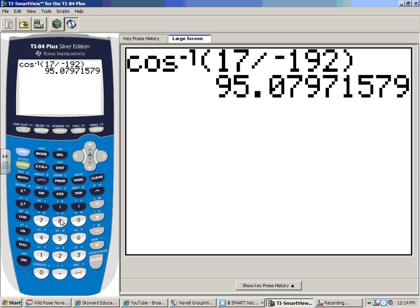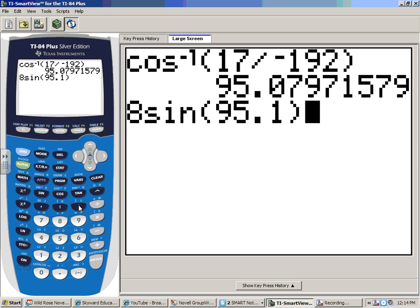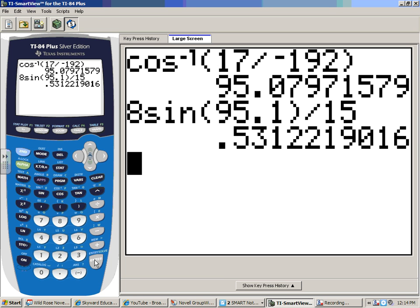So we've got 8 sine of 95.1. Don't forget to close off those parentheses on that one right there. Divided by 15. All right, we're expecting a decimal here. Oh, there you go. That's believable. And that's what sine of A equals. So we're going to take the arc sine of that to get sine away from it.